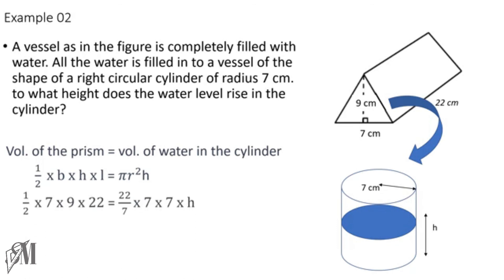Substituting the values — prism base = 7, height = 9, length = 22; cylinder radius = 7, height = h — we cancel one 7 from each side, cancel the 22s from each side, and cancel the remaining 7s. This leaves h alone on one side, and 9 ÷ 2 = 4.5 on the other. So h = 4.5 centimeters.